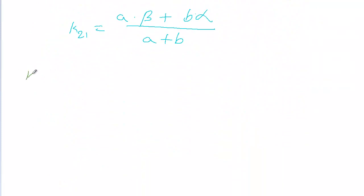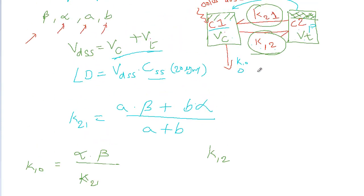Next, we find K1 to 0: that is alpha times beta divided by K2 to 1, which we just determined. Then we find K1 to 2: that is alpha plus beta minus K2 to 1. The units for all these elimination rate constants are hr⁻¹.